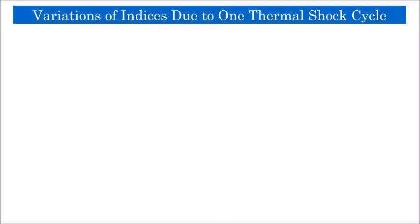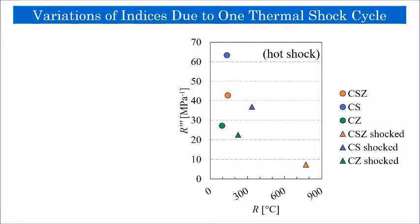We took this idea one step further and for the first time we inspected the variation of these indices due to thermal shock and used them as a material design tool. In this figure, for hot shock results, circles represent pre-shock parameters and triangles represent post-shock parameters. For one thermal shock cycle, CZ has the lowest degradation in indices, but CS shows the best behavior both before and after thermal cycle.